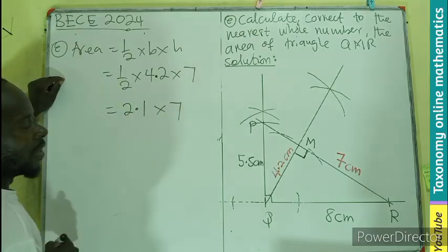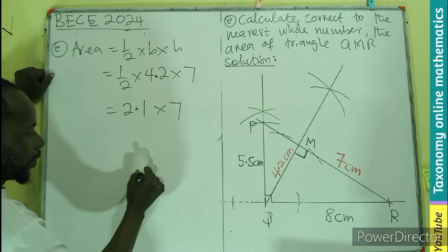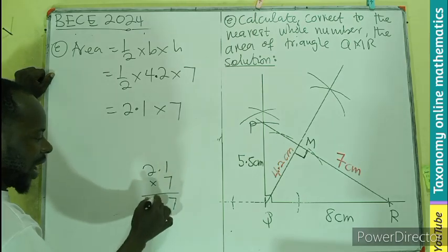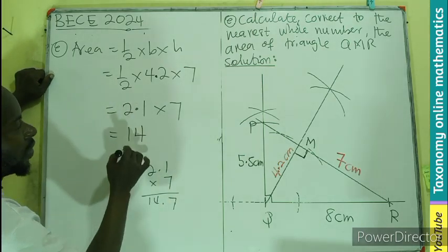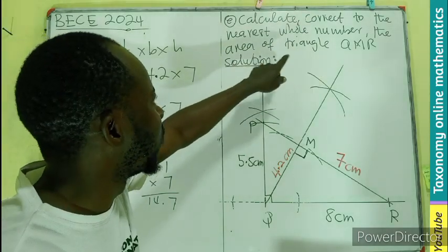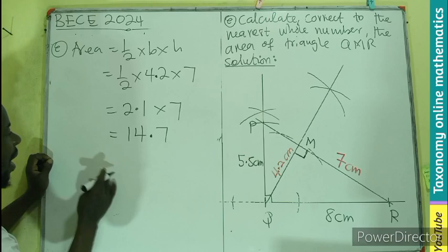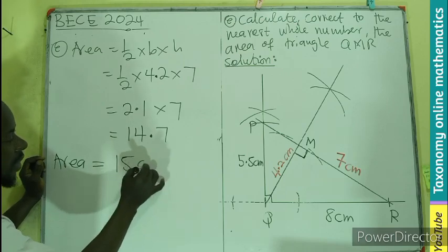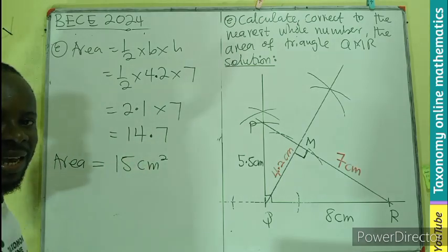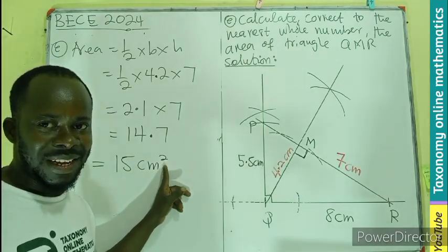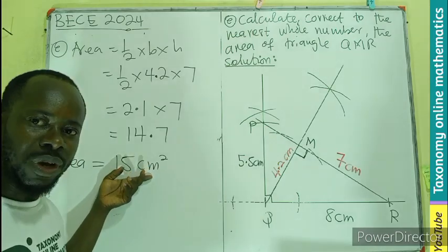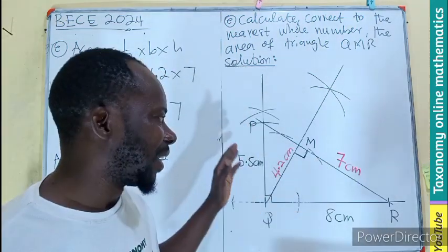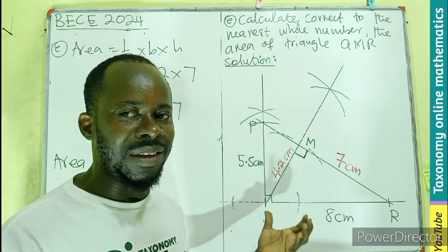So 2.1 times 7: seven times one is seven, seven times two is fourteen, giving us 14.7. We have to give the answer to the nearest whole number, so the area equals approximately 15 centimeters squared. In the previous episode there was also an omission of the squared unit — the square indicates it is an area, which is a two-dimensional measurement.